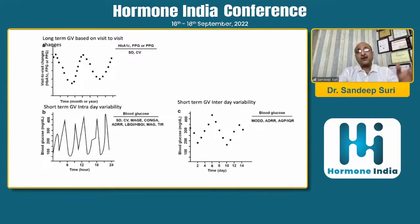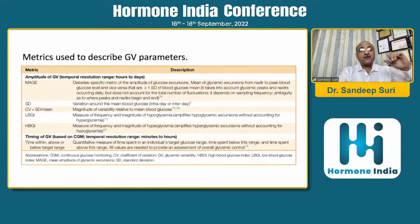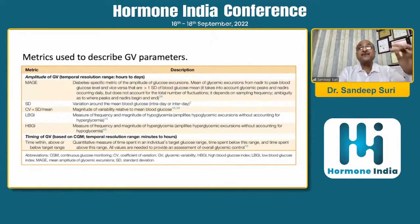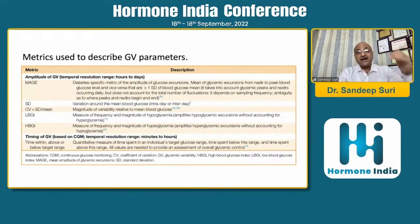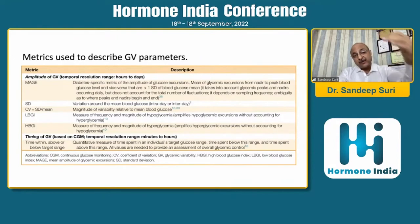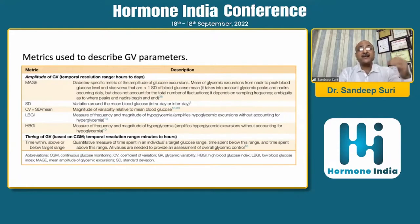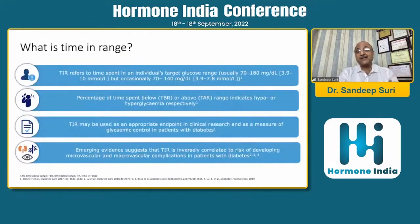For long-term glycemic variability, we talk about HbA1c, fasting plasma glucose, and MODD. MAGE is a diabetes-specific matrix of amplitude of glycemic excursion - mean of glycemic excursion from nadir to peak - but the excursion has to be more than one standard deviation. It takes into account glycemic peaks and nadirs occurring daily but does not account for the total number of fluctuations. Standard deviation is variation around mean plasma glucose; coefficient of variation is SD divided by mean plasma glucose multiplied by 100, and it should be 36% or less. LBGI addresses low plasma glucose or hypoglycemia excursions, whereas HBGI addresses hyperglycemia. Most importantly, we are using time in range as the more practical approach.